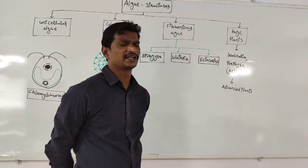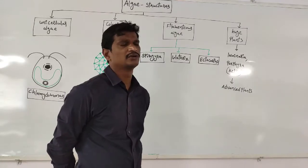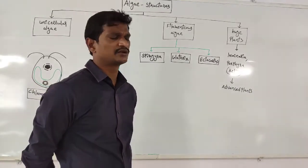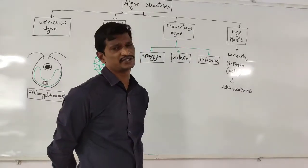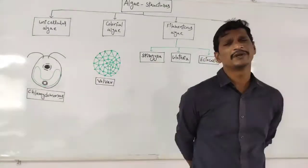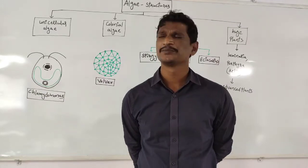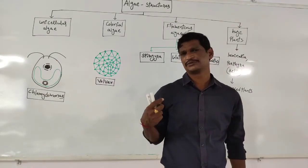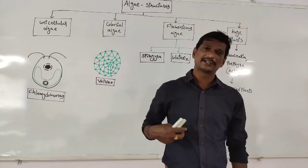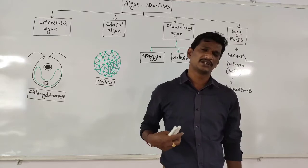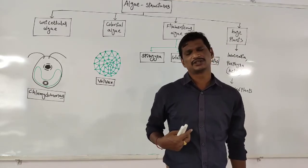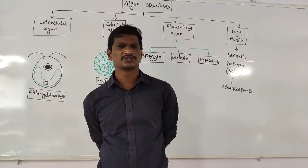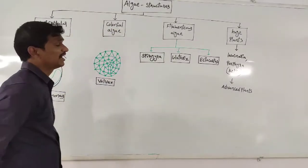We discussed lichens. Within the lichen, there is a fungal part and an algal part. Within that fungal part, either cyanobacteria or algae is present. The sloth bear is one of the best examples — it also contains algae. The algae connect to the epidermal cells of the sloth bear and are involved in the photosynthesis process.